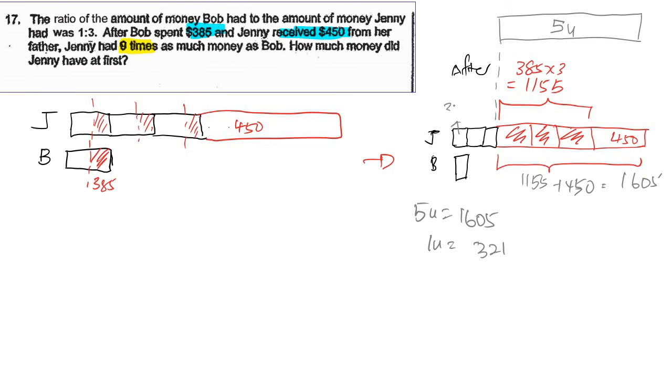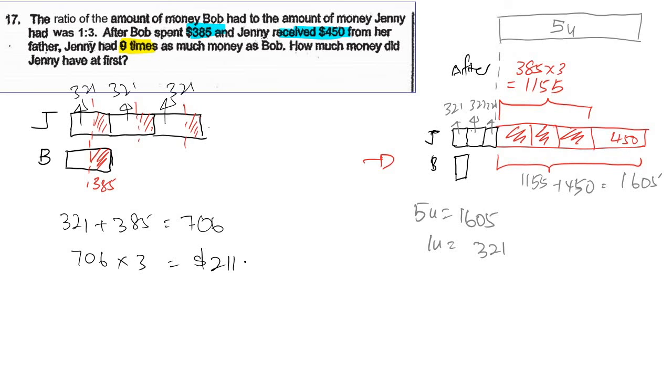So this portion here is 321, here is also 321, and here is also 321. But then it's asking you what is the initial. So I can clearly see here 3, 2, 1. So at first how much did she have? At first, you must remove this because at first you don't have this portion here. So it's 706. 1 unit equals to... because 706 times 3, she has 2118.